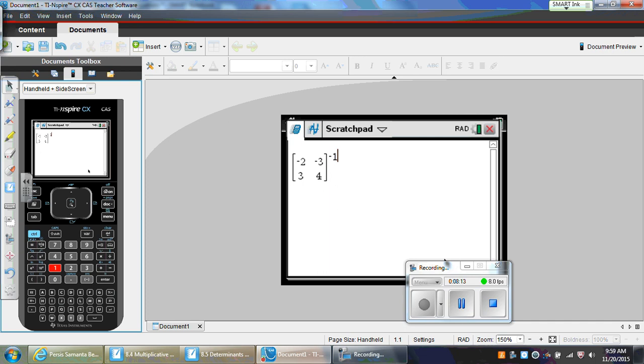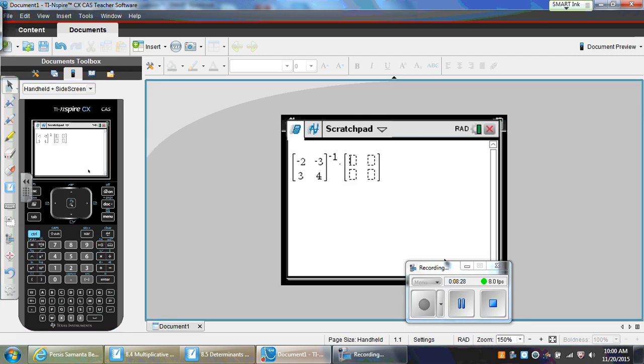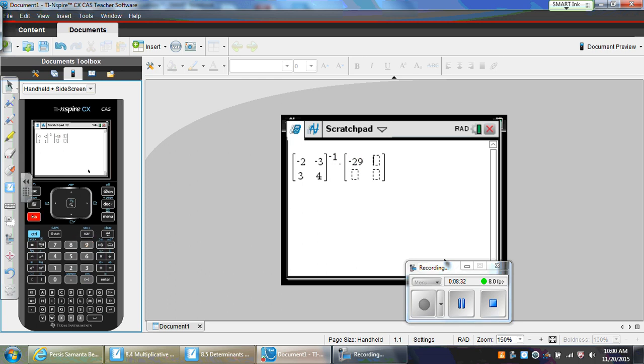Then, we exit out of that exponent with the arrow, and then times, and then we type in the coded message, which is also a 2 by 2. That was negative 29, negative 64, 43, and 92. And you press enter. And so, we get 13, reading by columns, we have 13, 1, 20, and 8. What does number 13 represent? What letter? M. And 1? A. And 20? T. And 8? H.